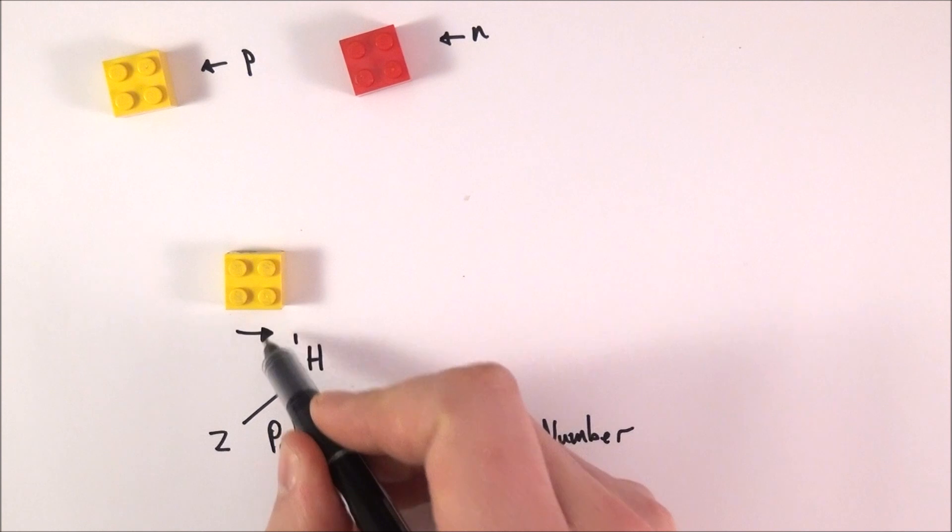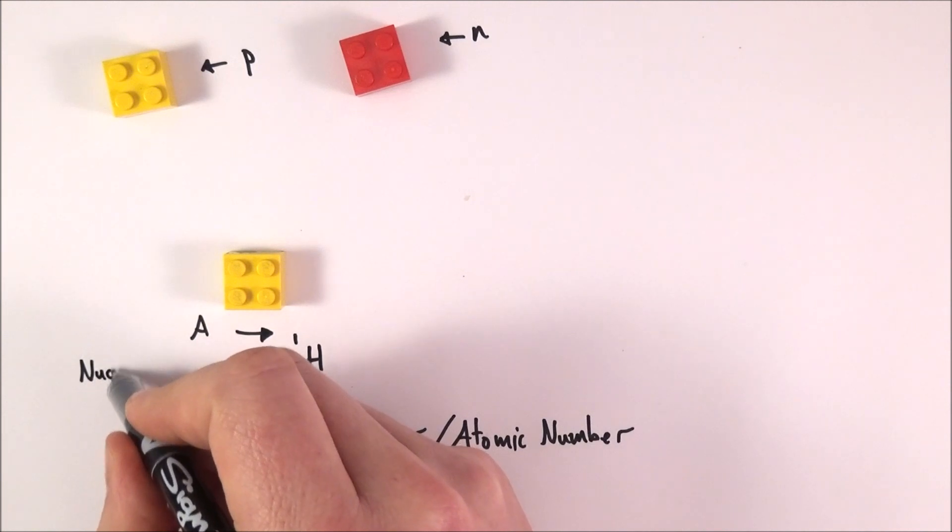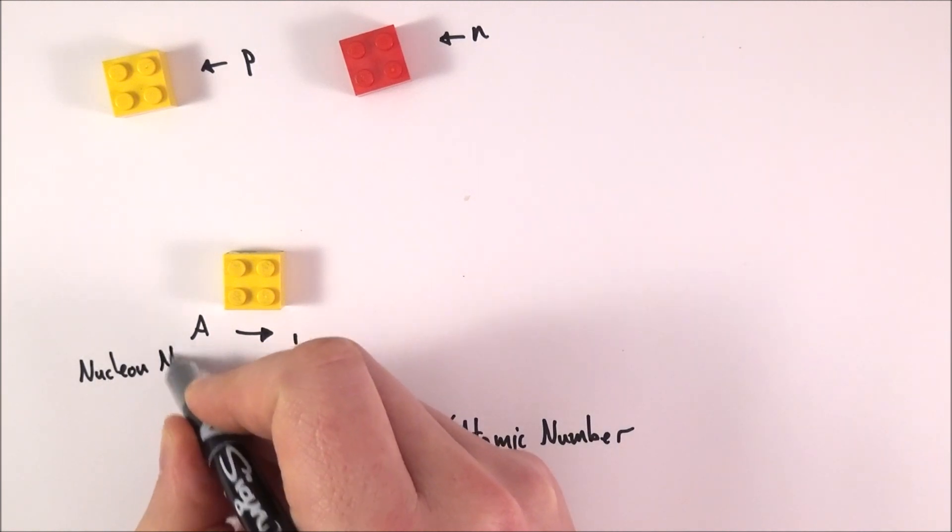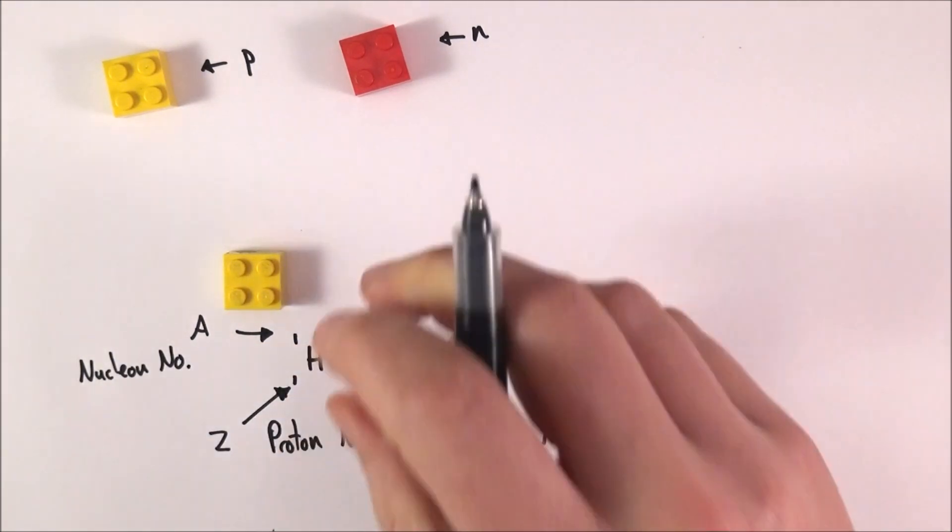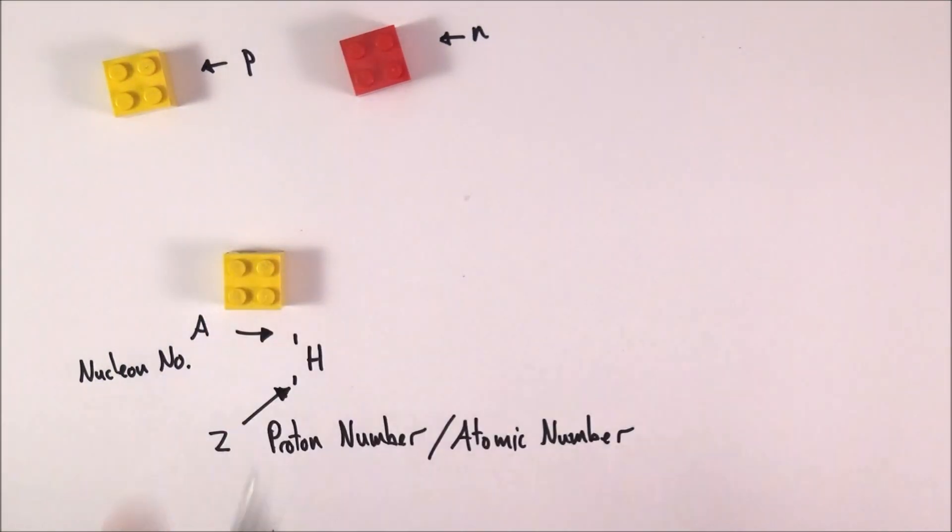The number at the top is often called A, and this stands for the nucleon number, where a nucleon is just a particle that exists in the nucleus of an atom. So a nucleon could be a proton or a neutron.